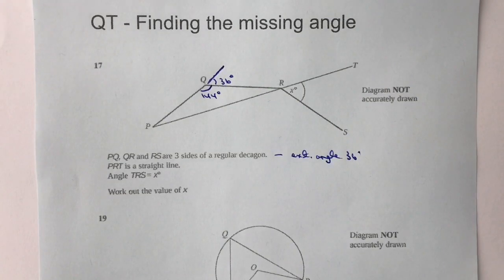Okay, so hopefully you're okay with that idea of these external angles being 36 degrees because there's ten of them and they all add up to 360.